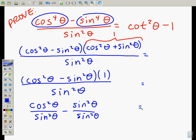This is good news for us because now we know that these terms have simple reductions. Cosine squared theta over sine squared theta is really cotangent squared theta.